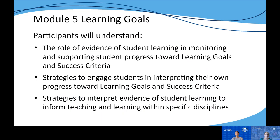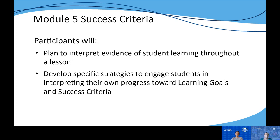In Module 5, the learning goals are for participants to understand the role that evidence of student learning plays in helping to monitor and support student progress toward the learning goals and success criteria. We also want participants to understand strategies they can use to engage students in the process of interpreting their own progress toward the intended learning outcomes, and strategies they can use to interpret evidence of student learning to inform teaching and learning at the classroom level within each specific content area. The success criteria for Module 5 include planning for how to interpret evidence of student learning throughout a lesson, and developing strategies that engage students in interpreting evidence of their own learning as they work toward the learning goals and success criteria.